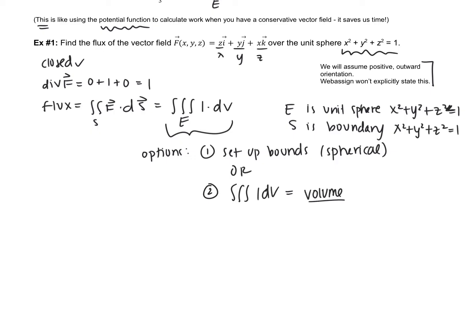So, conveniently, our surface is a sphere. So, instead, we can just find the volume of a sphere. So, of course, I'm going to do that because it's more efficient rather than setting up bounds. Hopefully, you remember volume of a sphere is 4 thirds pi r cubed. In our case, unit sphere has a radius of 1. So, we get a volume of 4 thirds pi, which means that the flux, in this case, is just 4 thirds pi.